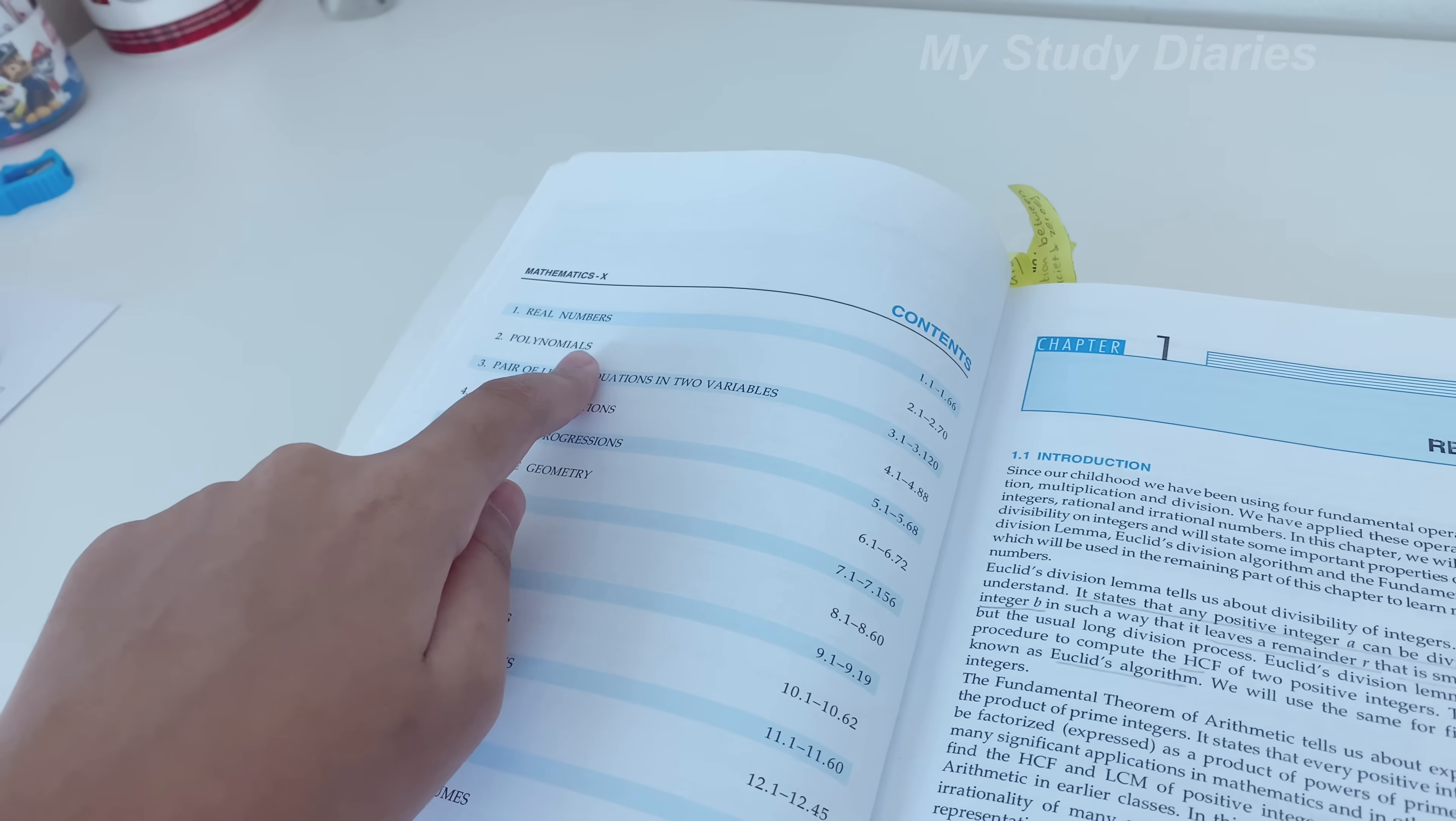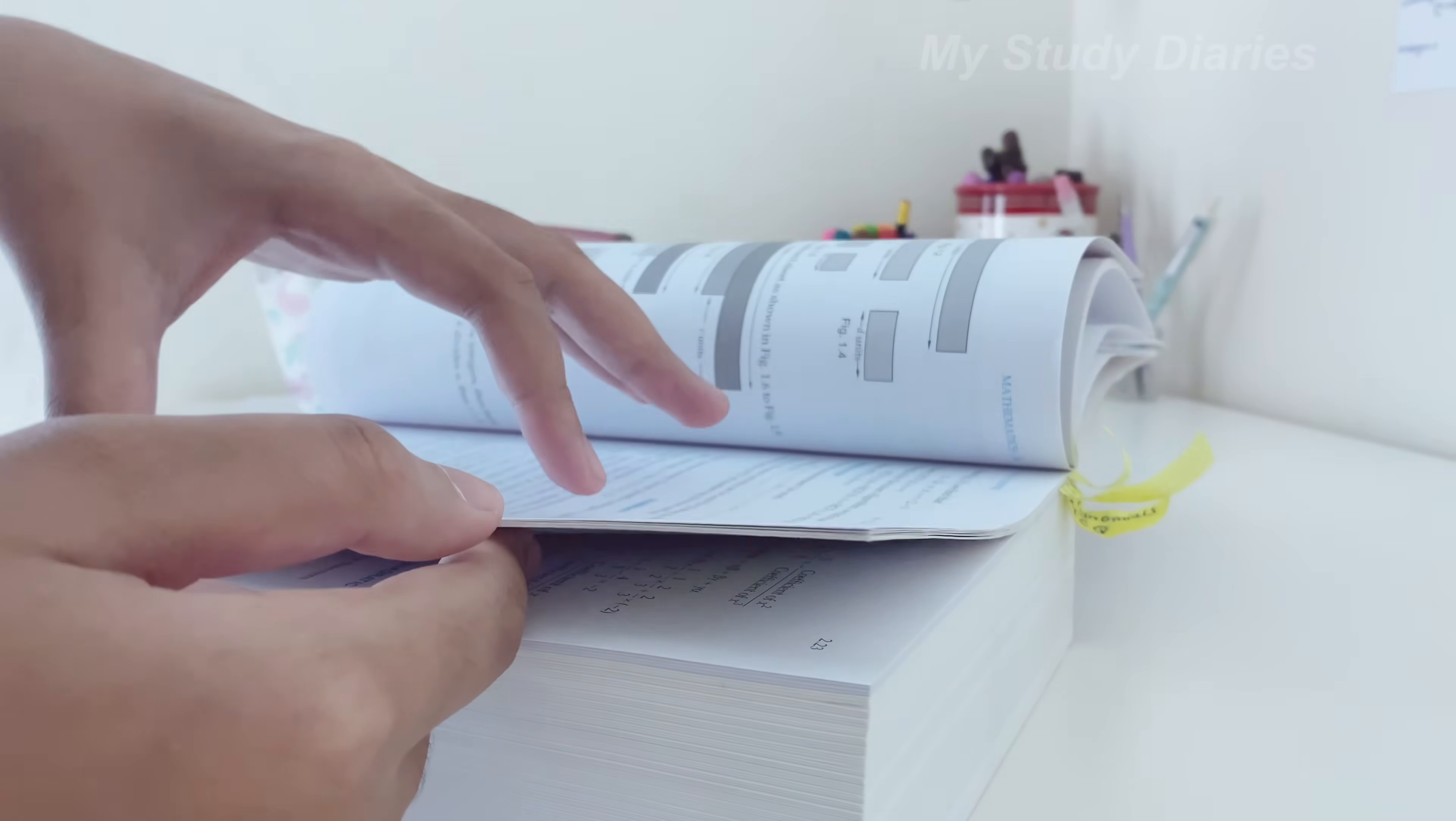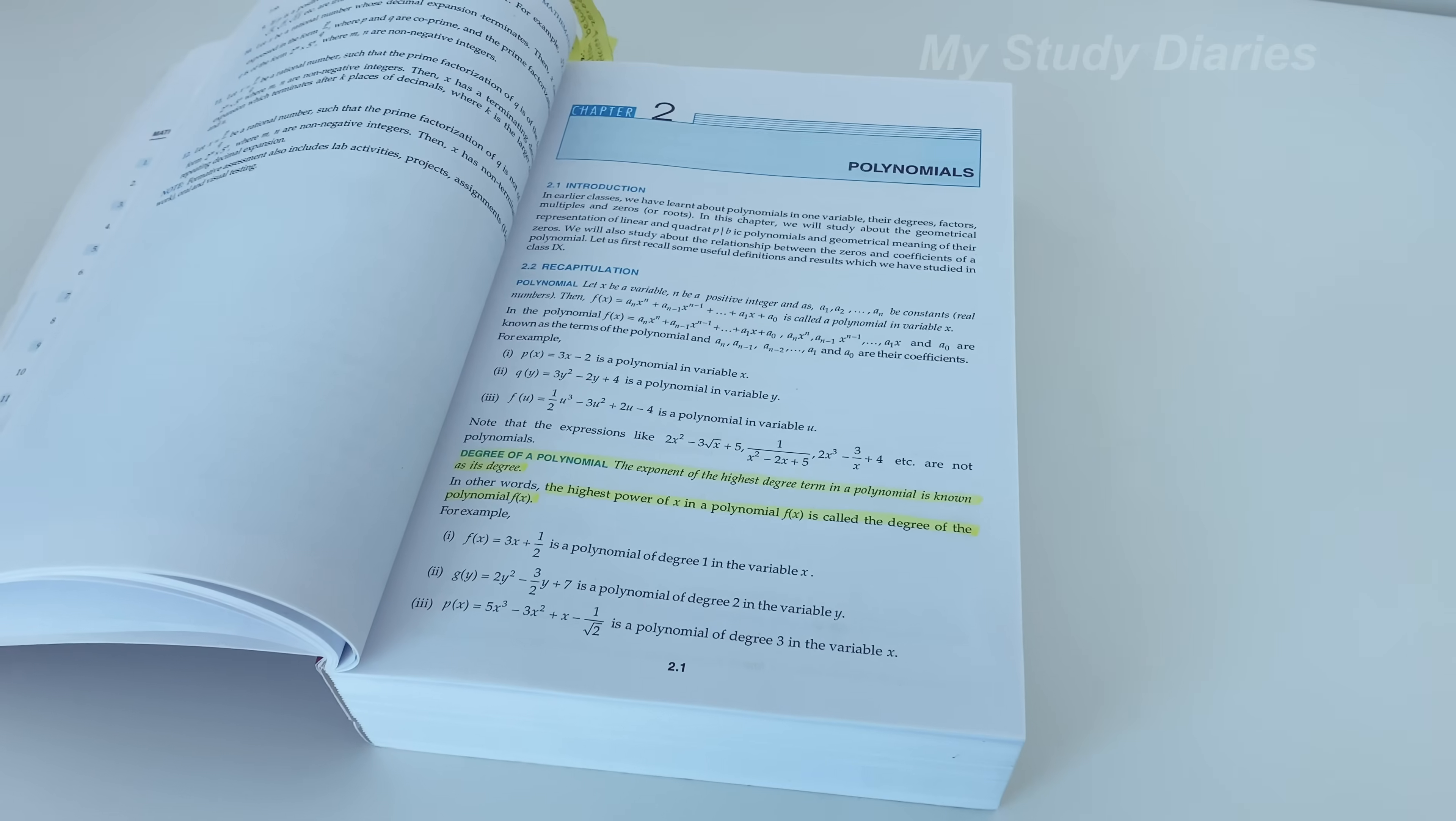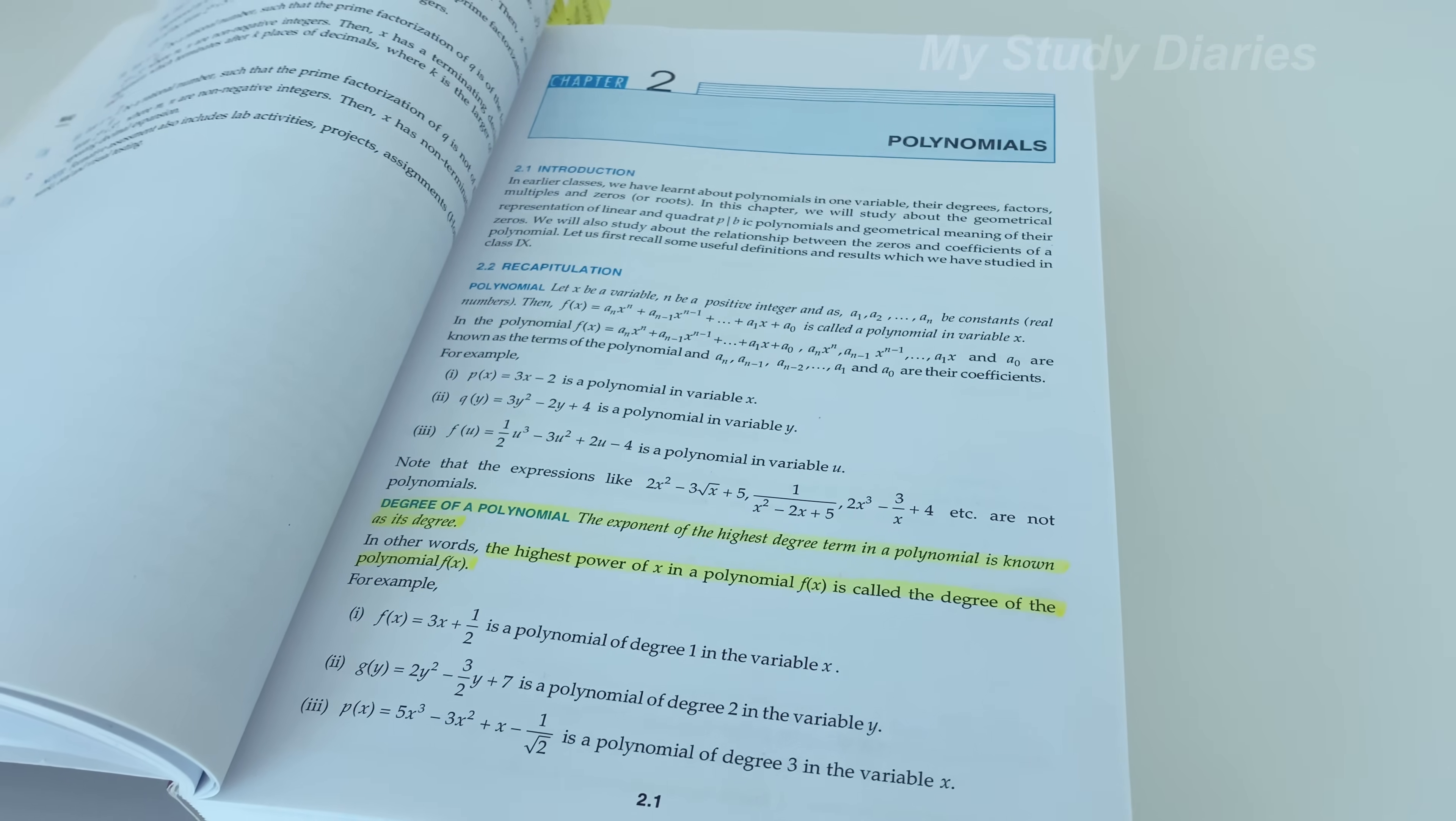So the R.D. Sharma book basically has entire CBSE 10th grade portions. And I'm going to be showing you one chapter which I did, which was polynomials. And I've done it for term one. So I'm just going to go over how I did the book. So this is the first page. It basically has a theory part of our same CBSE textbook.